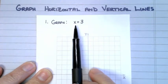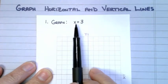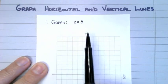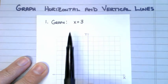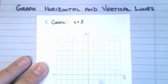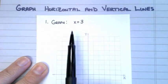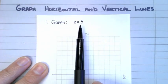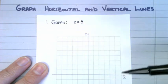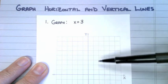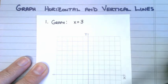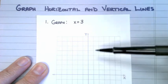Notice this equation only has an x in it — it doesn't have a y. So I need to be able to draw a line on this graph down here that only intersects the x-axis. This equation will only intersect the x-axis because it only has an x in it. What kind of line can I draw that will only intersect the x-axis? That would be a vertical line — a line that goes up and down.